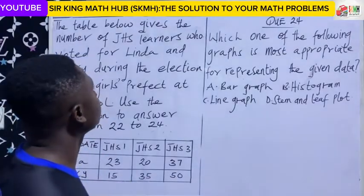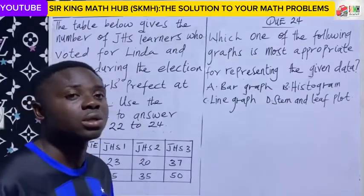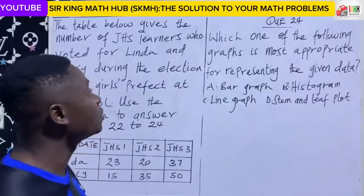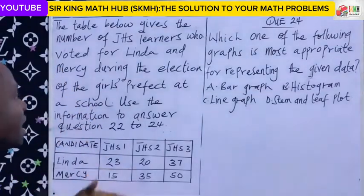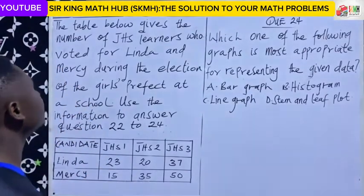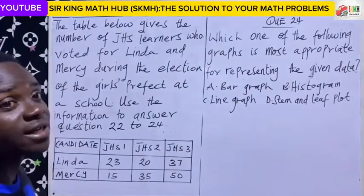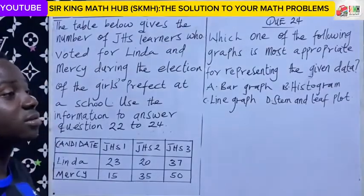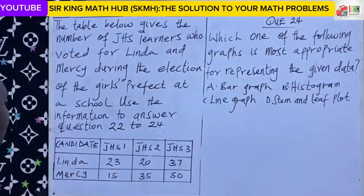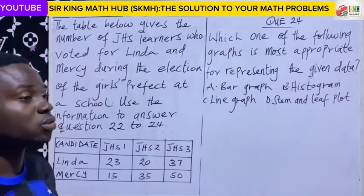We are given a preamble, and with this preamble we were told to use it to answer question 22, question 23, as well as question 34. So let's quickly revise ourselves with the preamble. A table has been given, and this table gives information concerning the number of JHS learners who voted for two candidates. We have Lenda and then Mercy, during the election of girls' prefects at the school. As you can see, these are the two candidates, Lenda and Mercy. And these are the three different classes: JHS one, and then JHS three.